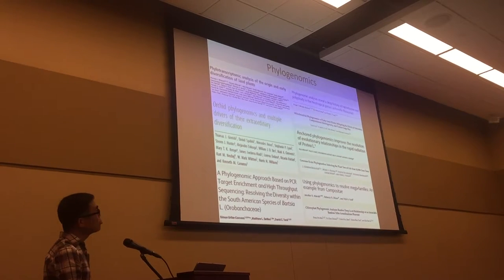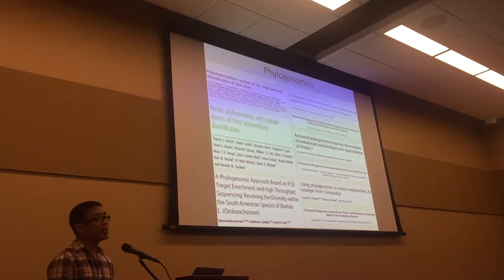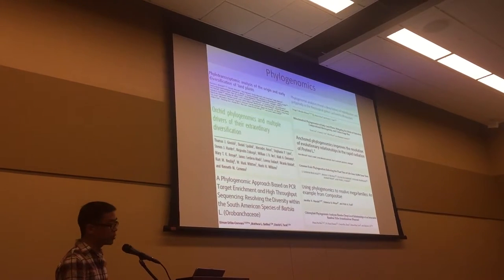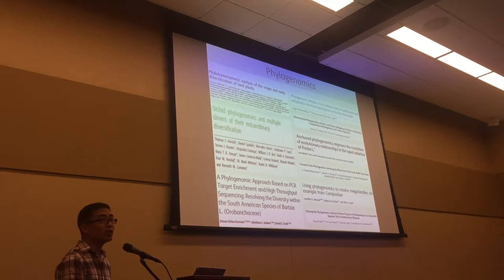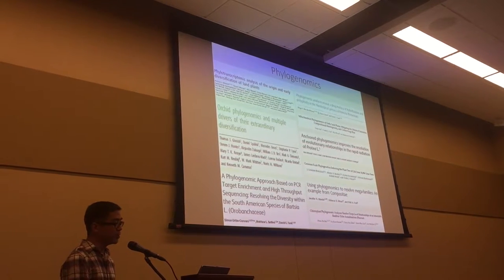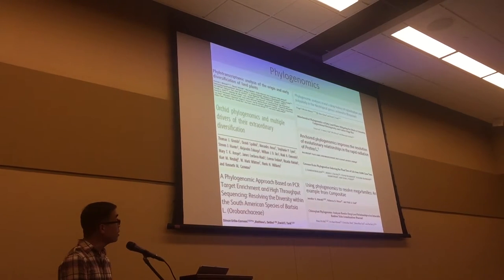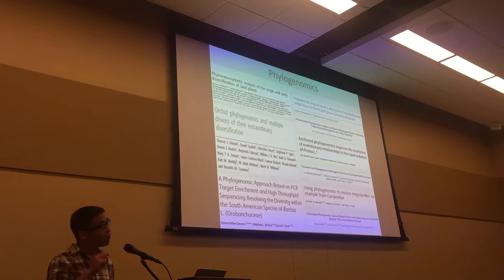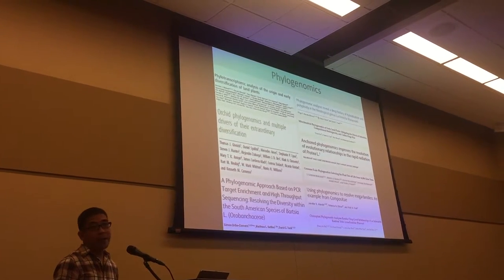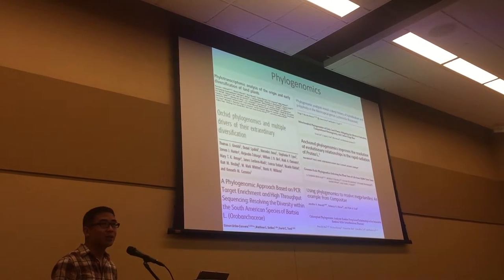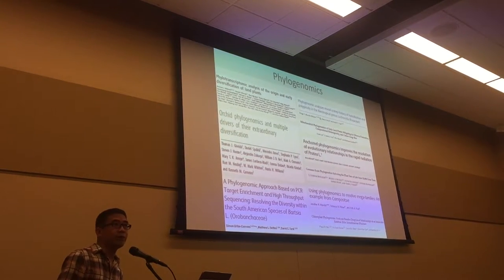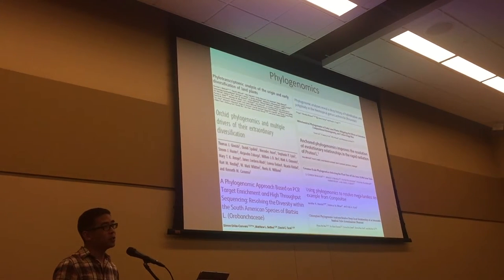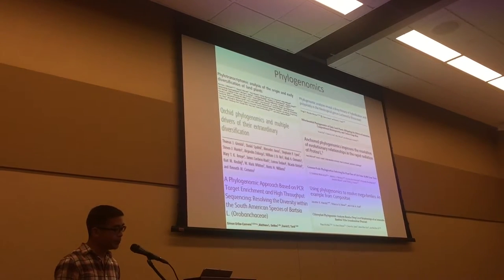Genome-scale data, including hundreds to thousands of genetic markers, are increasingly being used in plant phylogenomic studies. Such data is often necessary to adequately resolve rapid radiations and adequately address issues with gene-tree incongruence caused by incomplete lineage sorting and hybridization.